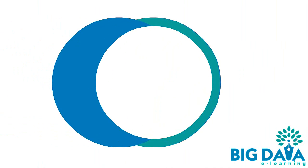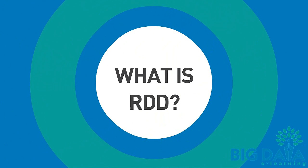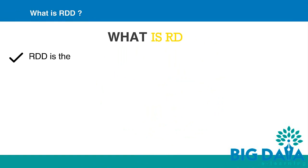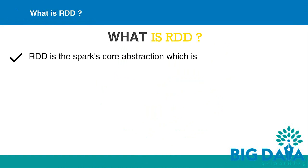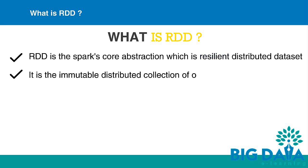What is RDD? RDD is a Spark core abstraction, which stands for Resilient Distributed Dataset. Resilient meaning the ability to be recomputed from history.